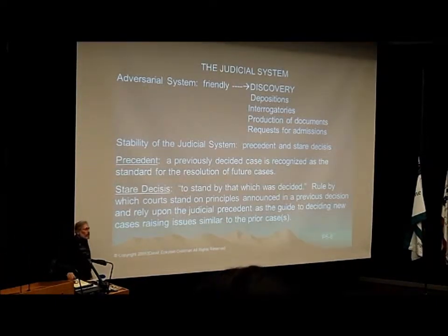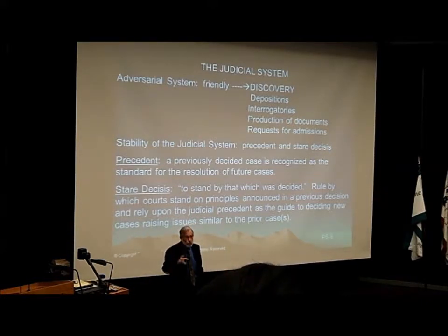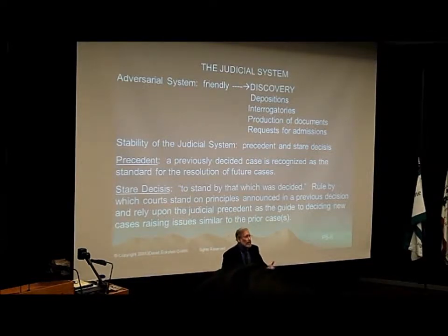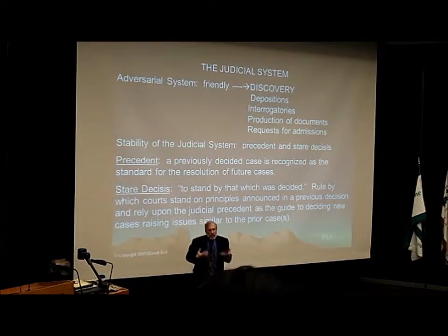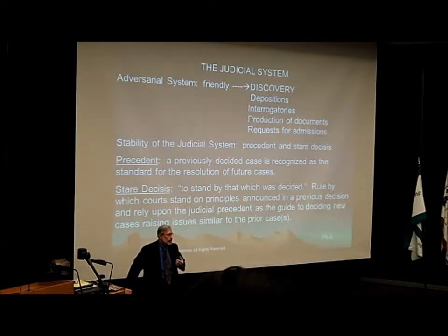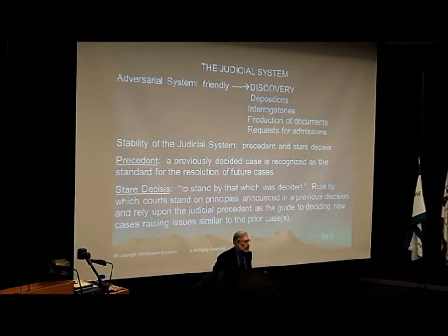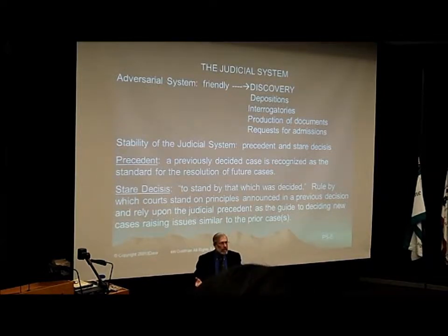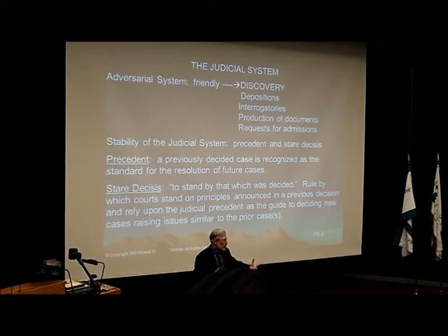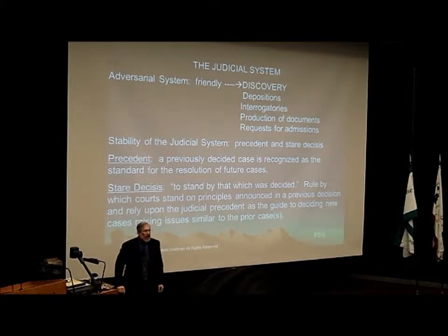The American jurisprudential system is unique in that it is adversarial — we have two sides to each case. Remember, there are actually three sides to every case: the plaintiff, the defendant, and the truth. Hopefully all three will intersect and an appropriate decision will be made. We are not an inquisitorial system where a judge interrogates and makes a decision. We are instead a system where both sides argue and present information, witnesses, and facts, and then someone makes a determination.